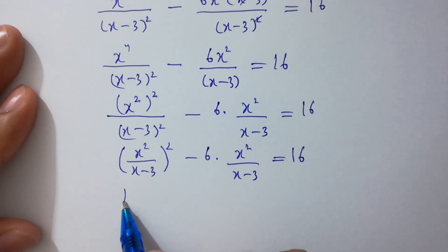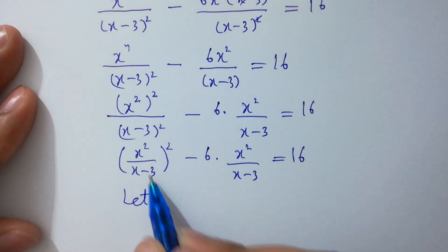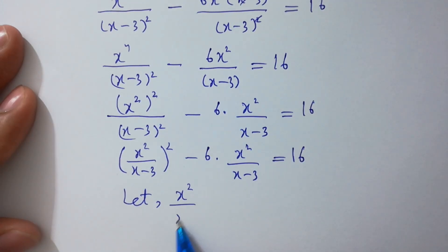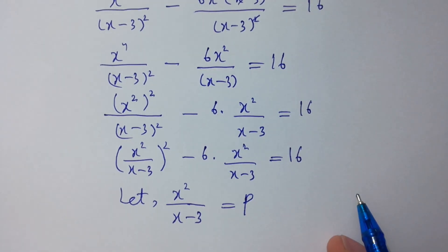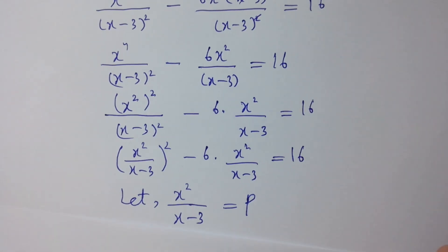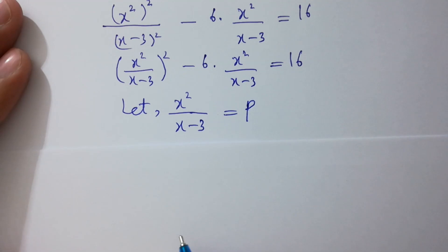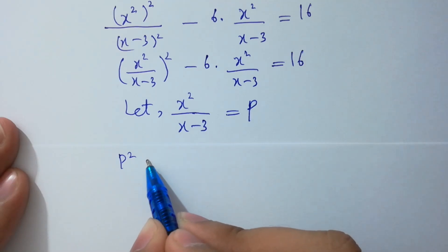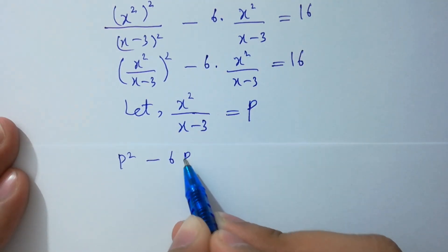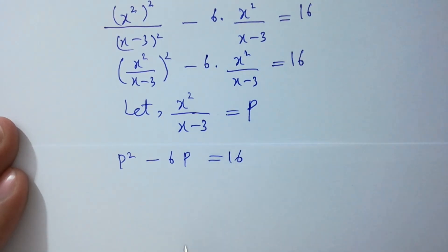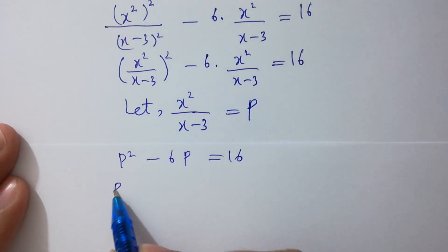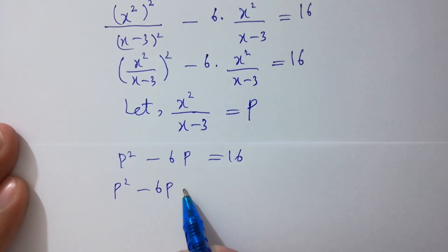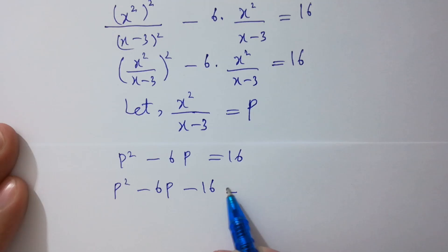Let x²/(x - 3) equal p. So this equation becomes p² minus 6p equals 16. Rearranging: p² minus 6p minus 16 equals 0, which is our quadratic equation.